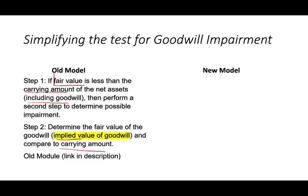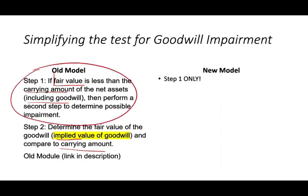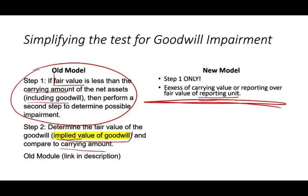That was the old method. Now with the new method, it's step one only. We look at the difference between the carrying value and the fair value of the reporting unit — that's where goodwill resides — and we're done. There's no step two; we don't have to find the implied value of goodwill. The excess of the carrying value is your loss. Just look at the old module and skip step two. This is easy, good stuff.